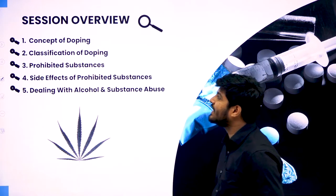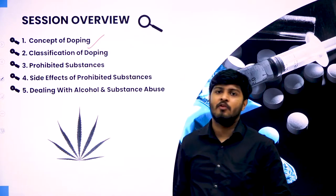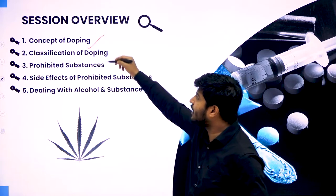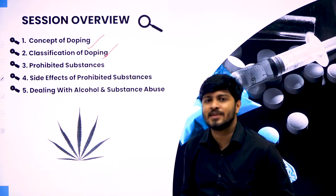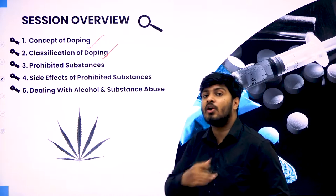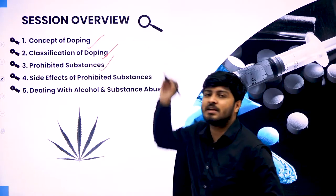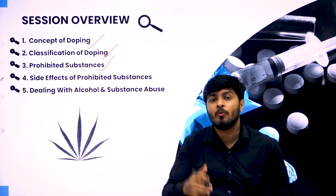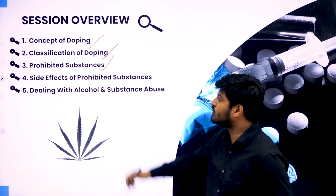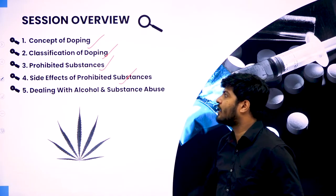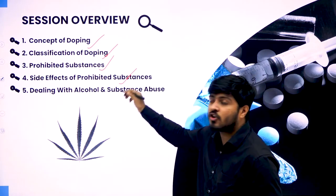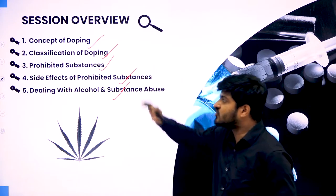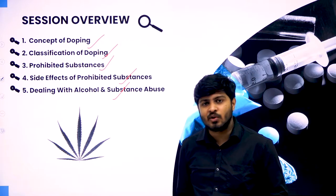Now let's start off with the session overview. First, we will understand the concept of doping and its meaning. Then we will look into different classifications — what types are there and how it is classified. Then we will look into prohibited substances or the practice of consumption of doping in sports at different levels. Then we will look into some of the side effects of prohibited substances and have a conversation about dealing with alcohol and substance abuse.